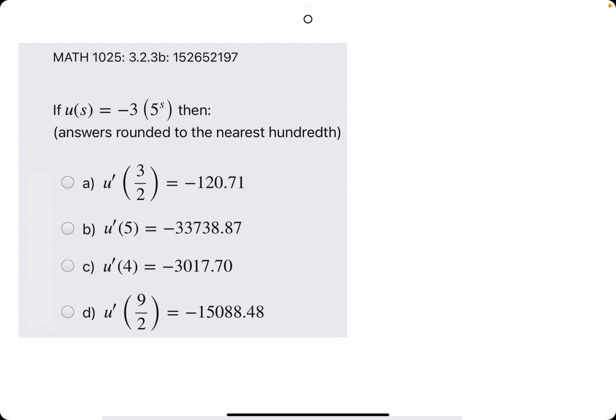Let's go ahead and work out two examples for this problem. In this problem, they give us u of s equals negative 3 times 5 to the s.